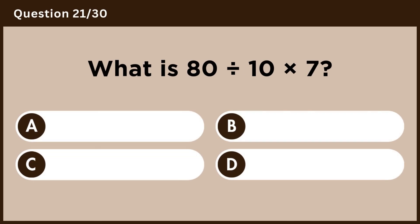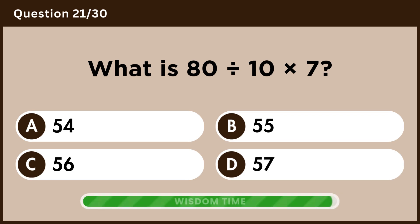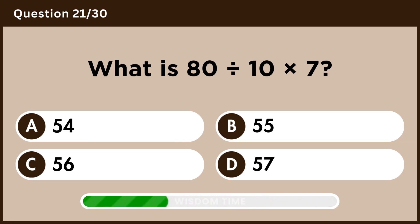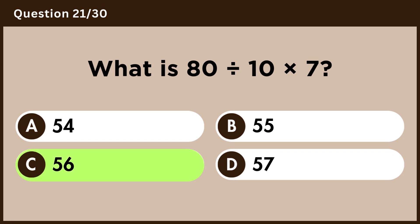What is 80 divided by 10 times 7? Answer C, 56.